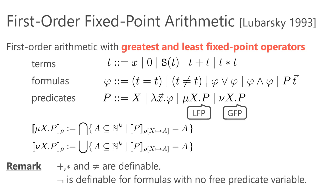First-order fixed-point arithmetic is a first-order arithmetic with greatest and least fixed-point operators. The syntax of the logic is shown here. A formula is equality, inequality, disjunction, conjunction, or application of a predicate to terms. A predicate is a predicate variable, an abstraction, or a least or greatest fixed-point. The semantics is straightforward and omitted here. For example, the least fixed-point is the minimum element in the set of fixed-points — that is, solutions to X = P(X) — given by the intersection of fixed-points. Note that some connectives are definable using successor, equality, and fixed-point operators, so the restriction to linear arithmetic does not decrease the expressive power.